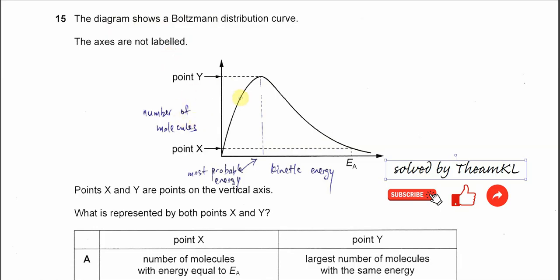For the Boltzmann distribution, the y-axis is always the number of molecules. So point Y and point X represent numbers, not energy.